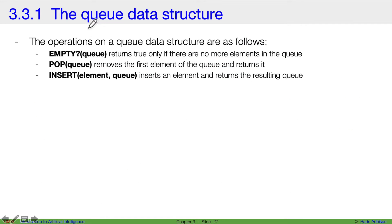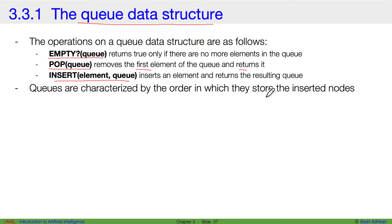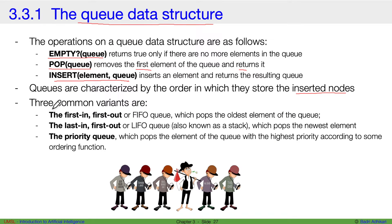For solving search problems, we use the queue data structure. The operations on a queue are: check whether the queue is empty, pop an item from the queue (removes the first element and returns it), or insert an element into the queue. Queues are characterized by the order in which they store inserted nodes. The three common variants are first-in first-out (FIFO), last-in first-out (LIFO), and the priority queue. In FIFO, whatever is inserted first is also the first to leave. In LIFO, the most recently inserted item comes out first. The priority queue pops out elements with the highest priority.